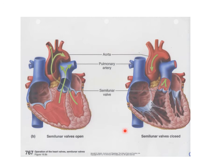When talking about the semilunar valves, during ventricular contraction they flatten out and open up, allowing blood to go into the pulmonary trunk and into the aorta. Then by gravity, when blood wants to come back down, those little cups close off the middle and don't allow blood to flow back into the ventricles.